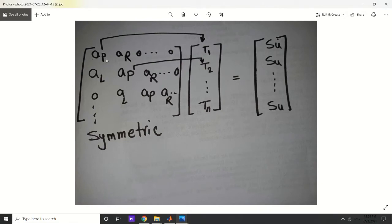If you look, it's a symmetric matrix. aP, which is the coefficient of the interested point, is always at the diameter. At the left we have the coefficient of the left-hand side, and at its right we have the coefficient at the right, and the other terms are going to be zero.